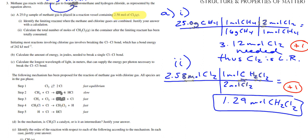What I like about this problem is it has a lot of different stuff in it - that's why I chose this one. Initiating most reactions involving chlorine gas involves breaking Cl-Cl bonds, which has a bond energy of 242 kilojoules per mole. Part B: calculate the amount of energy in joules needed to break a single Cl-Cl bond. Most people are going to get this wrong because they're not understanding - when they give you an amount of energy and then say a single bond, you think 242 is the answer, but it's never that easy.